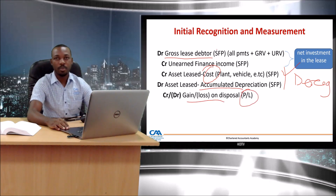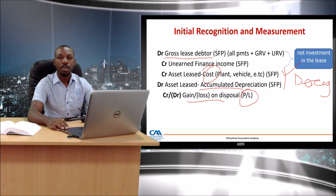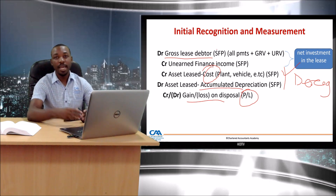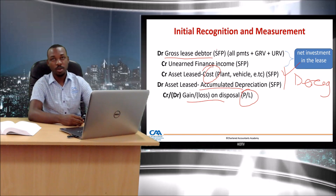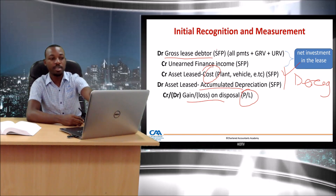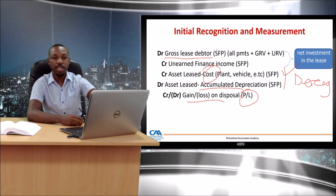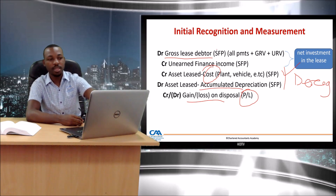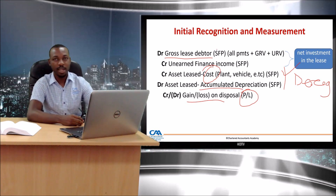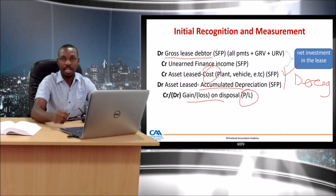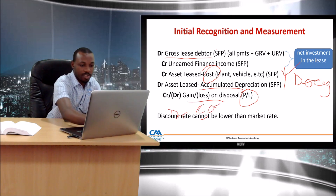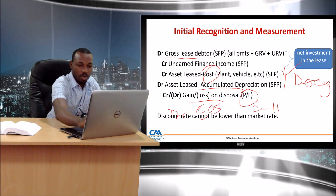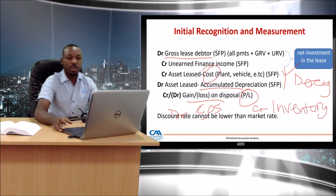For a manufacturer/dealer lease — for example, Croco Motors or Mazda where they're selling inventory through leases — instead of crediting PPE, you credit sales because it's a sale transaction. You debit your net investment in the lease and credit your sales, accounting for VAT. Then you raise a second journal entry for the removal of inventory: debit cost of sales and credit inventory.